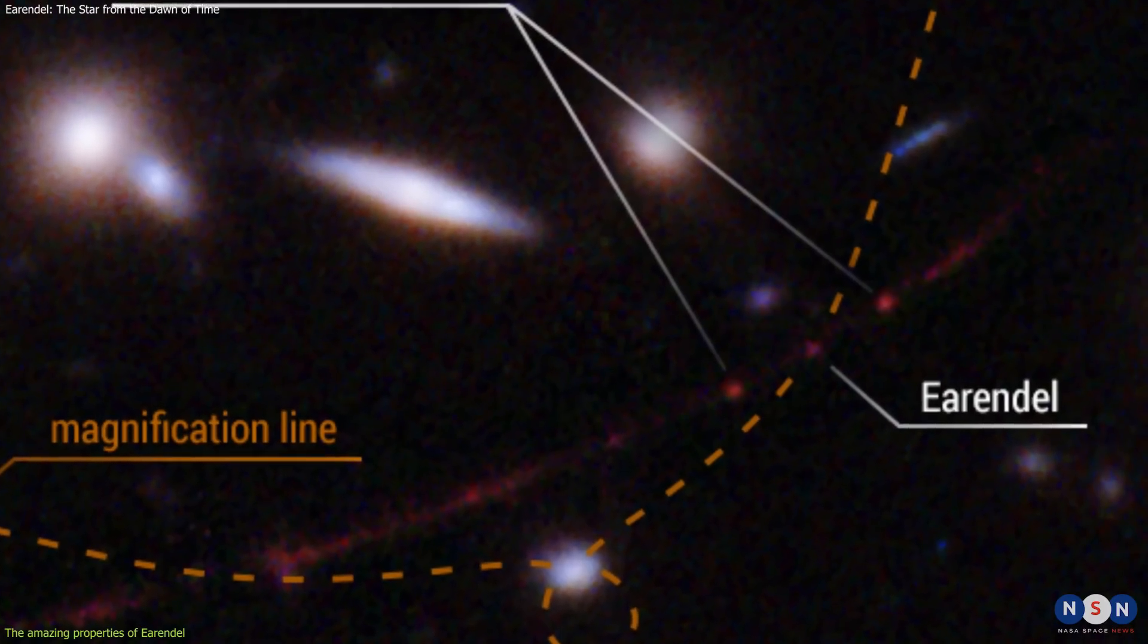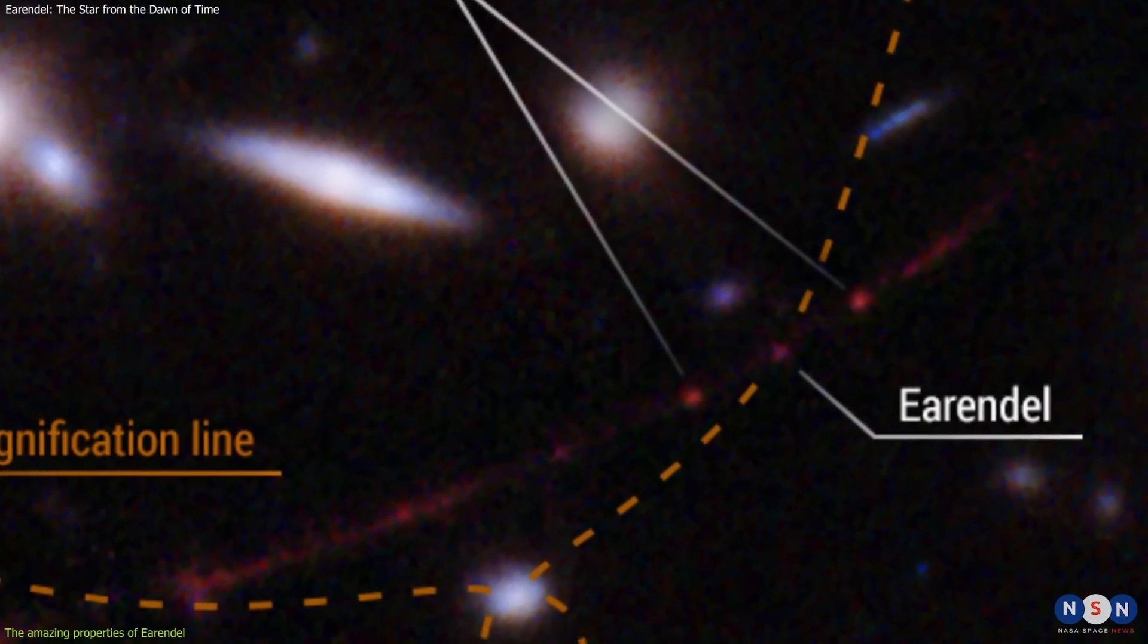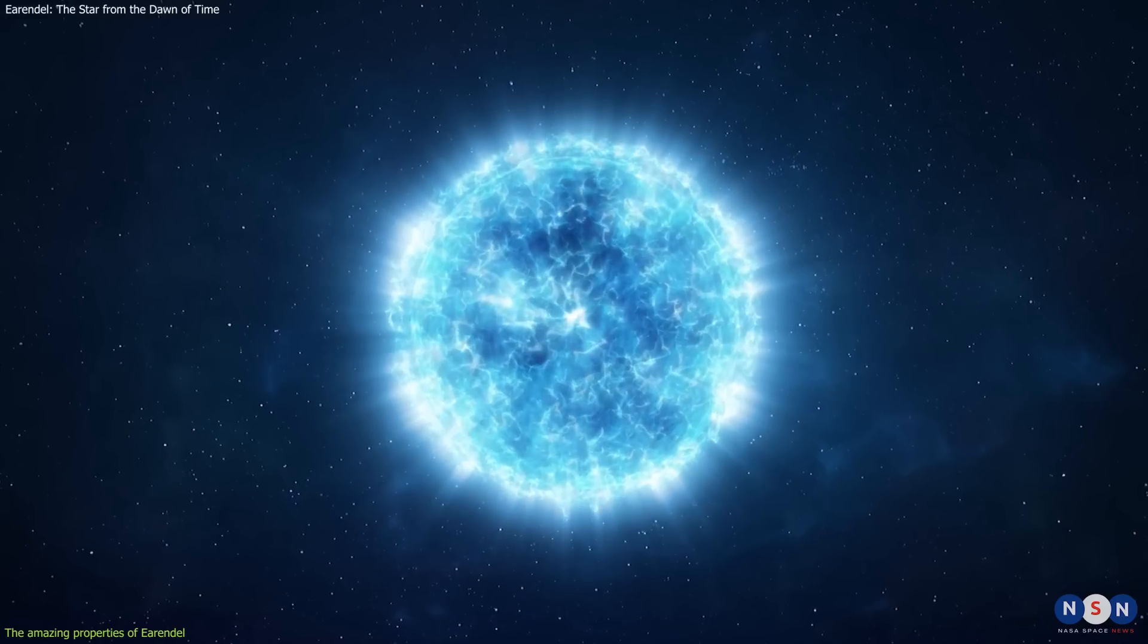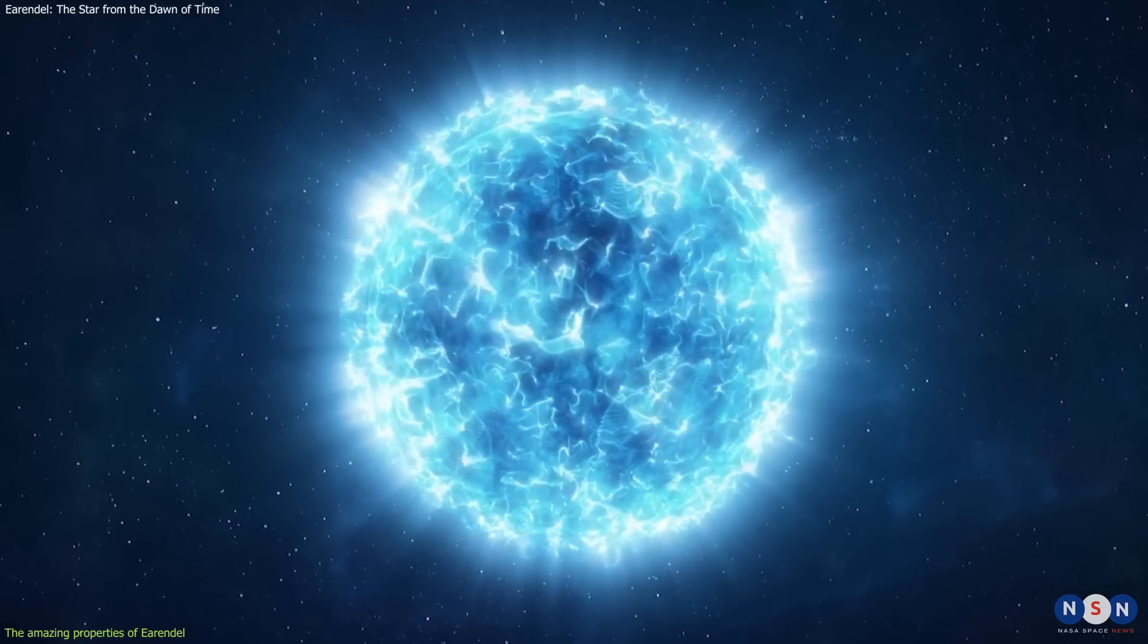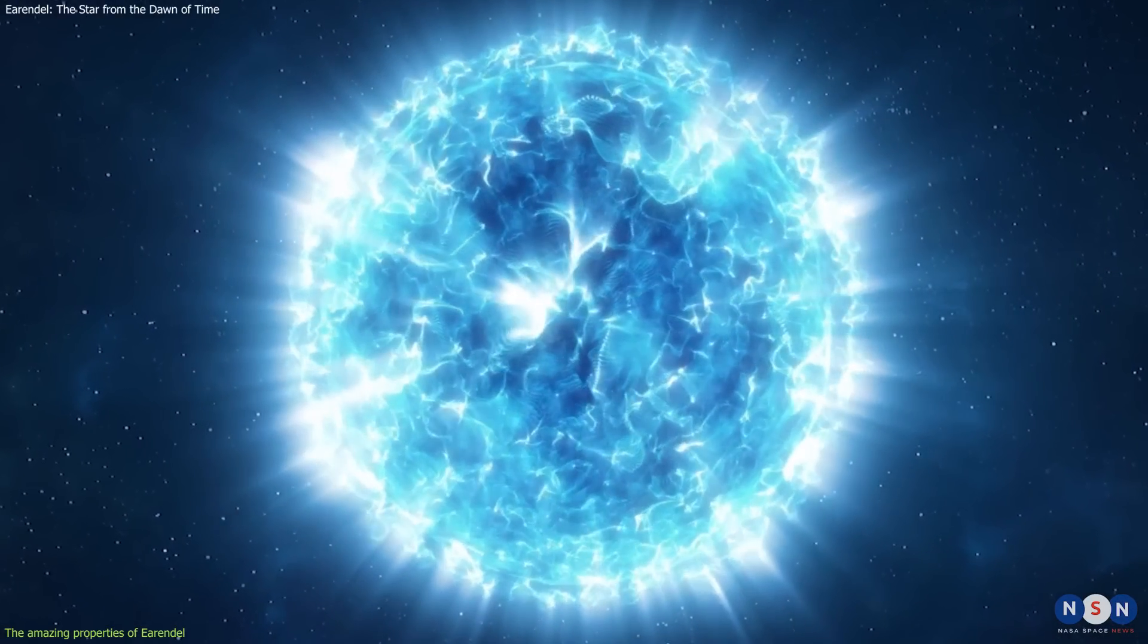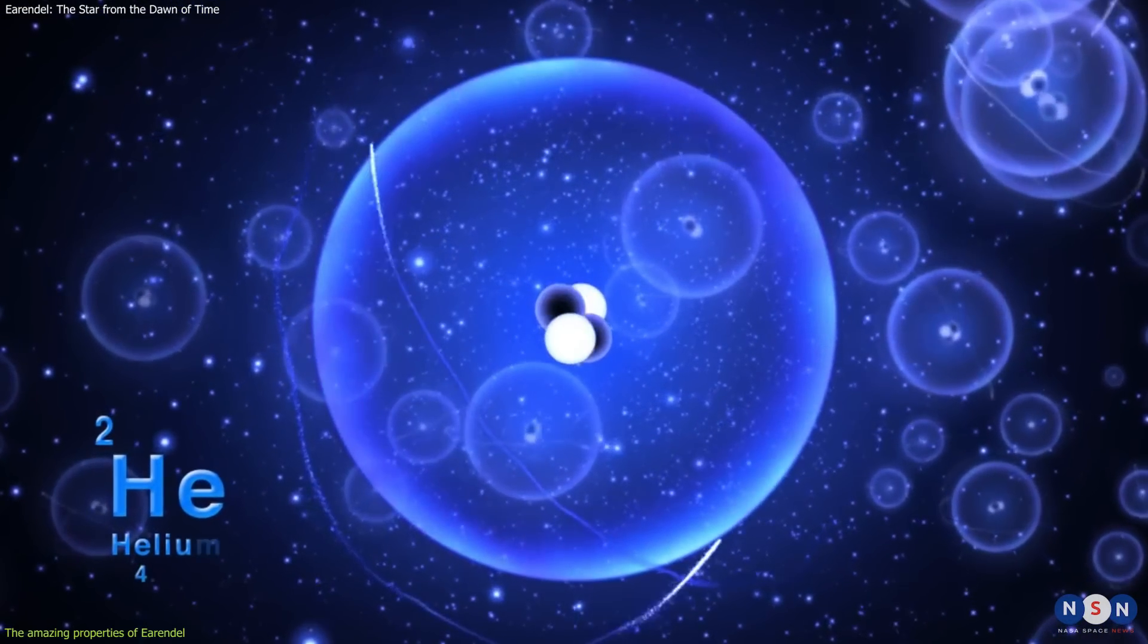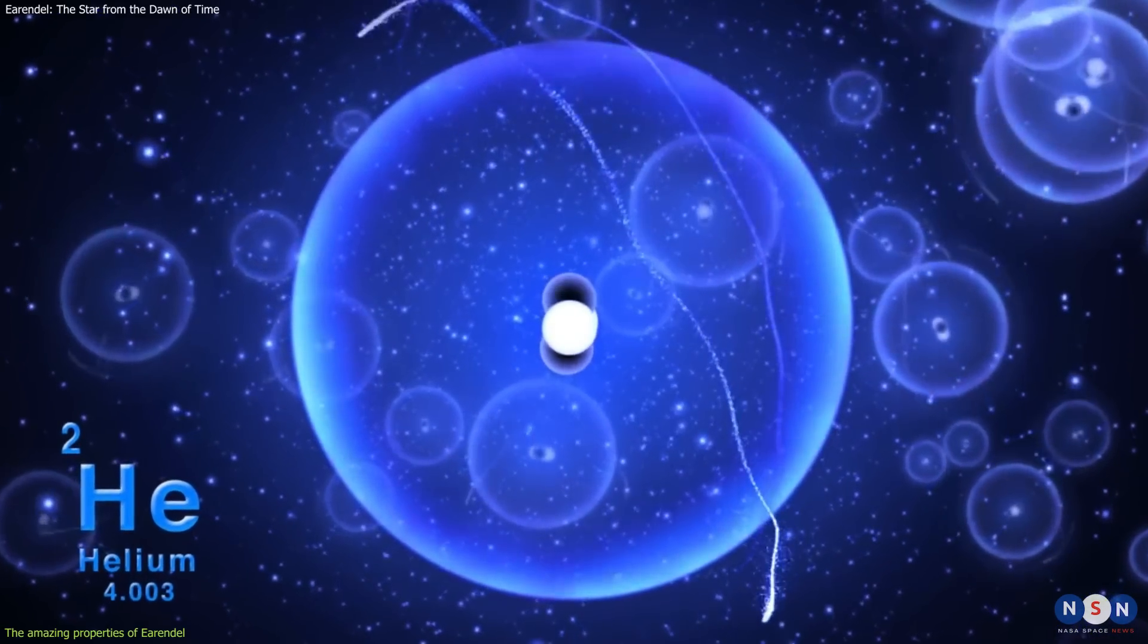By analyzing the colors of its light, Webb was able to determine its temperature, brightness, and chemical composition. The colors of this star's light show that it has a blue-white color, which indicates that it is very hot and young. It also shows that it contains hydrogen and helium, the most abundant elements in the universe, but no metals, which are heavier elements that are produced by nuclear fusion inside stars or by supernova explosions.